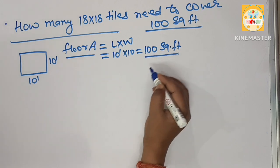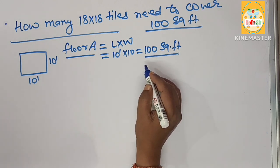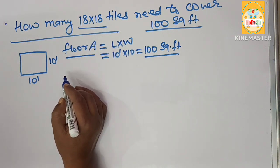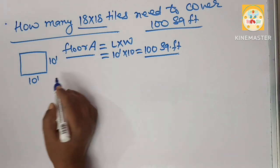If you have 100 square foot room or floor area, how many 18 by 18 tiles do you need to cover that area?